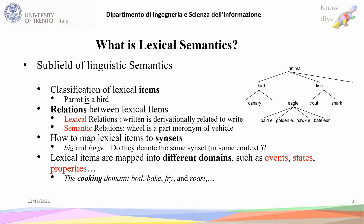These relations are categorized into two types. The first one is lexical relations, which in general map word forms. For example, 'written' is derivationally related to 'write.' The second one is semantic relations, which map word meanings together. For example, 'wheel' is a part-meronym of 'vehicle.' Also, the most important thing in this field is how to map lexical items into a specific domain, and then these domains form sense-sets, which I will talk about in the next slides.